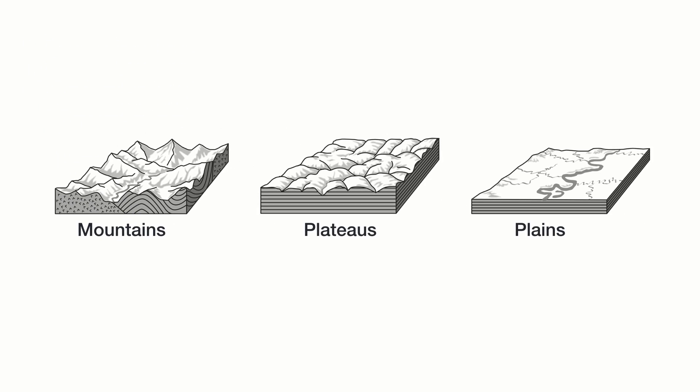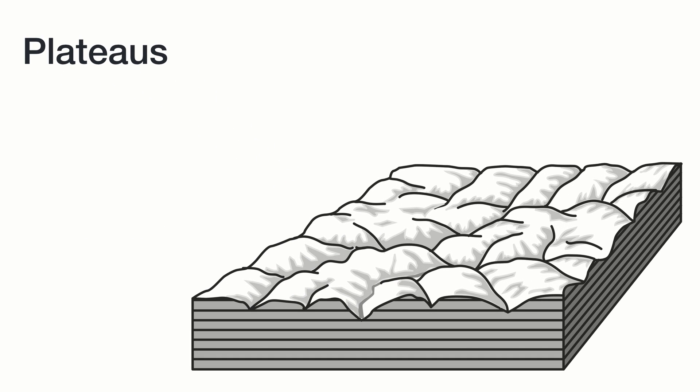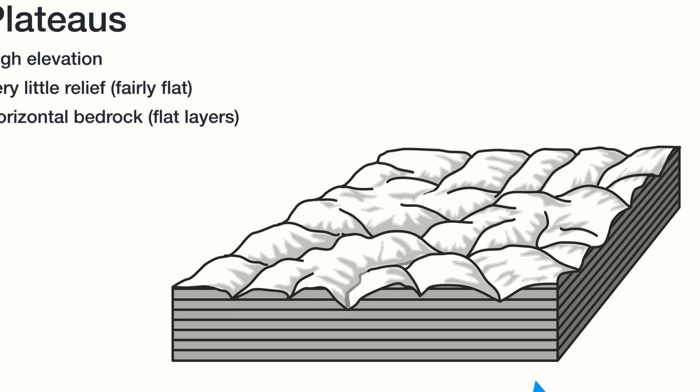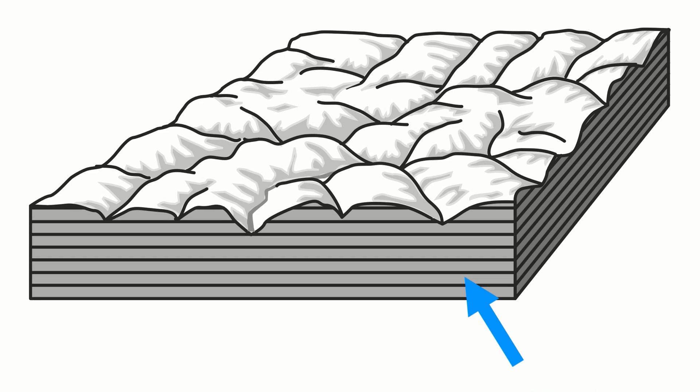Let's take a look at the second type of landscape, a plateau. Like a mountain, a plateau tends to have high elevation. Different though, in that it has very little relief — it tends to be fairly flat. Most importantly, plateaus do not have deformed bedrock; rather they have horizontal or flat bedrock layers, and you can see that in this diagram.